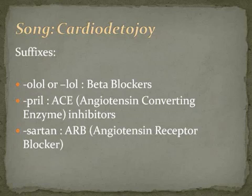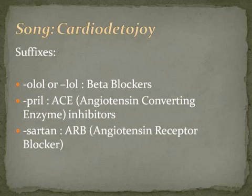Here is a bit more explanation. In the first line, it's O-L-O-L, P-R-I-L, and S-A-R-T-A-N. Those are the suffixes for beta blockers, angiotensin converting enzyme inhibitors or ACE inhibitors, and ARBs — angiotensin receptor blockers. The ACEs and ARBs are very similar. If you go to an ACE and the patient has a cough, you should switch to an ARB. It works well to remember things when you match them up like that.